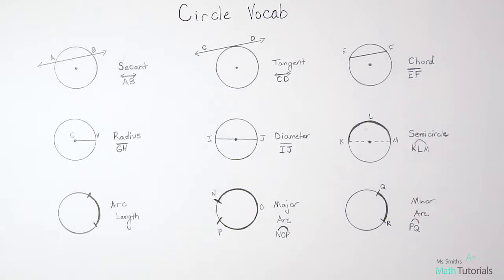This first one we're going to talk about is called a secant. Notice that it is a line that crosses through the circle and it continues on. It has an arrow on both sides, which means it stretches on. It doesn't just stop when the circle stops.